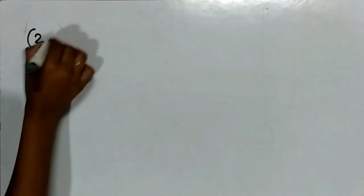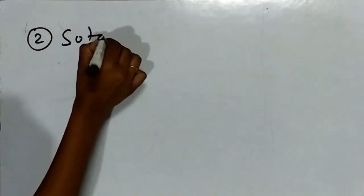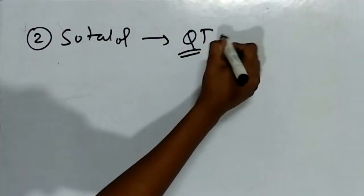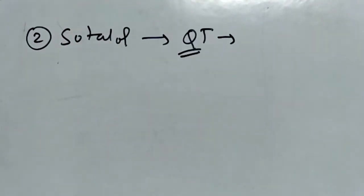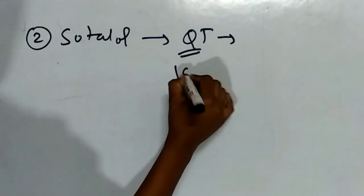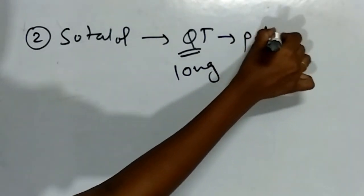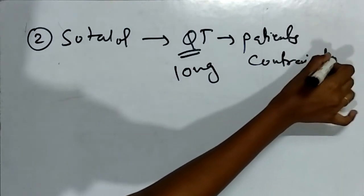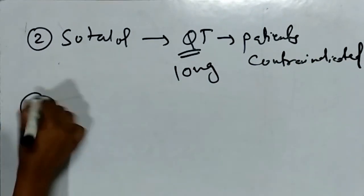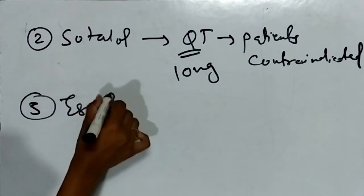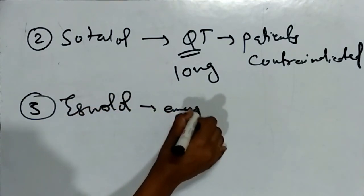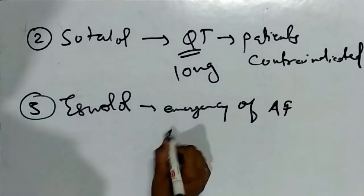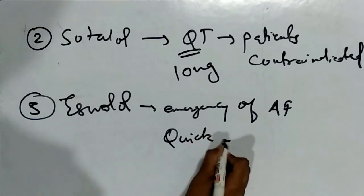It is less effective for PSVT than adenosine and verapamil. The second drug is sotalol, which is mostly contraindicated in patients with long QT interval. The third drug is esmolol, used in emergency of atrial fibrillation. It is quick acting and short acting.